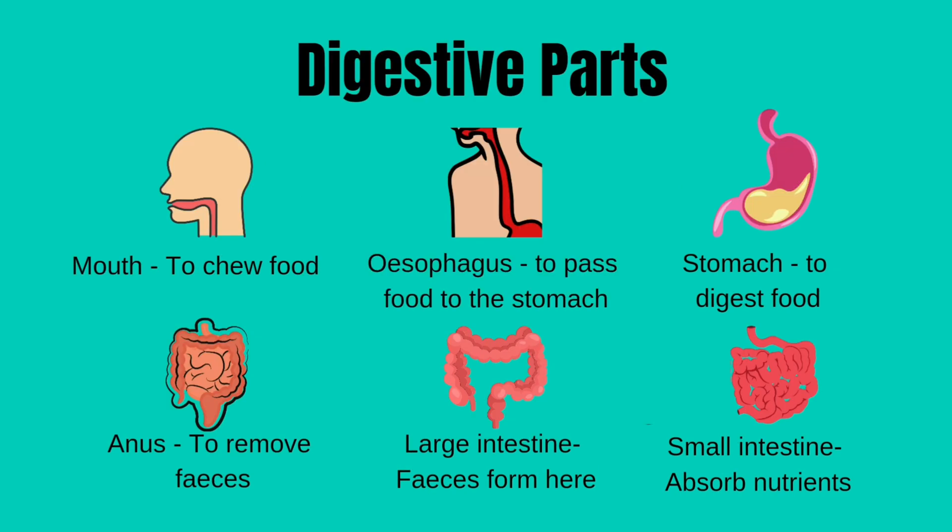Let's see the digestive parts and their function. Mouth: the function of the mouth is to chew food. The process will be helped with the presence of teeth, tongue, and also saliva. Esophagus: the function of the esophagus is to pass food to the stomach.